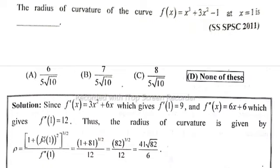f''(x) is equal to 3 times 2x, that is 6x plus 6. So at x equals 1, f''(1) is equal to 6 plus 6 equals 12. The radius of